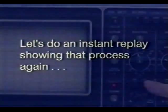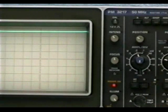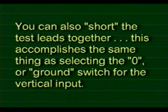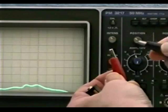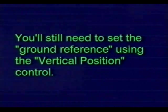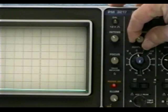Let's take a look at that procedure again. Hit the channel A ground switch, use the vertical position control to set your reference, unground the channel A input, and take your measurement. You can also short the test leads together — this accomplishes the same thing as selecting the ground switch for the channel A vertical input. Personally, I'd rather hit the ground switch, as shorting the test leads together wastes time. The accuracy of your measurements depends heavily on your ability to carefully set the ground reference trace.